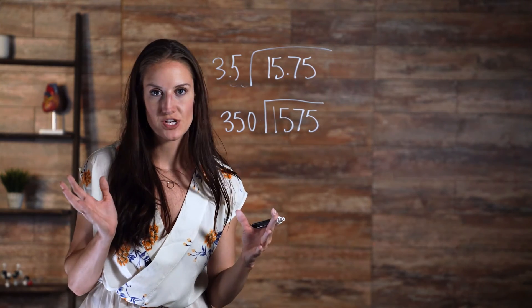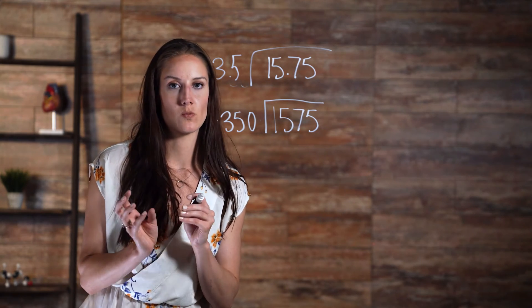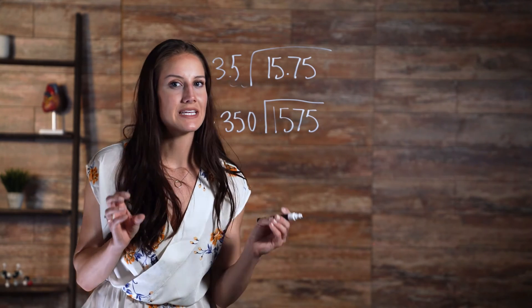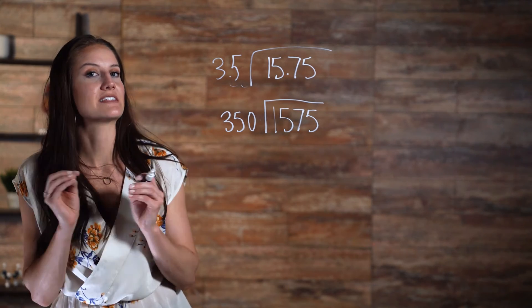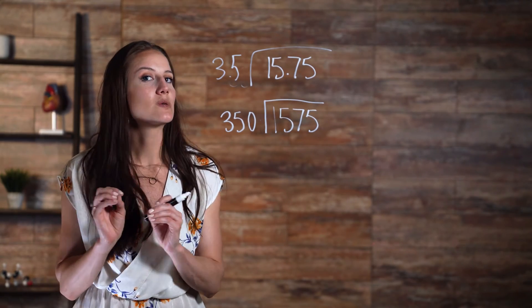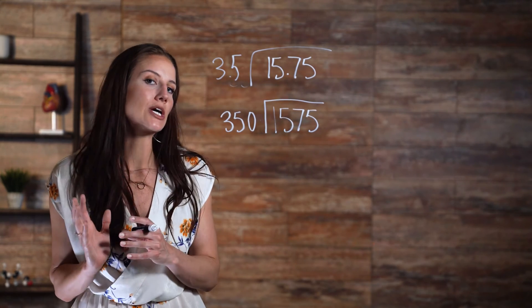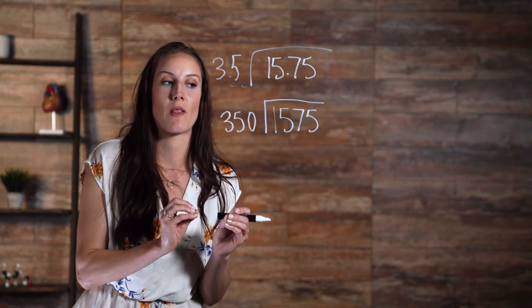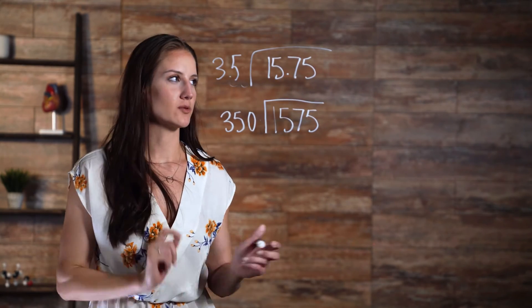The problem is now long division. 350 does not go into 1, 15, or 157. So we need to guess how many times it goes into 1,575. 350 goes into 1,000 around three times. So 4 would be a good estimate for the number of times it goes into 1,575. Let's do some quick multiplication to double check.